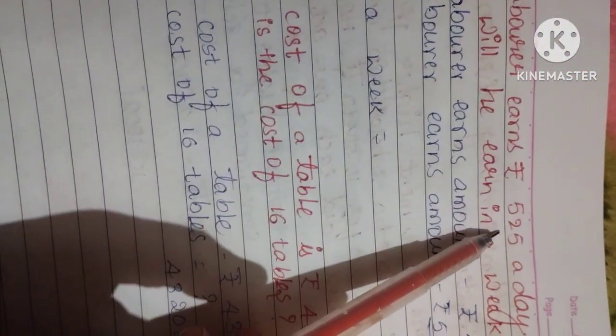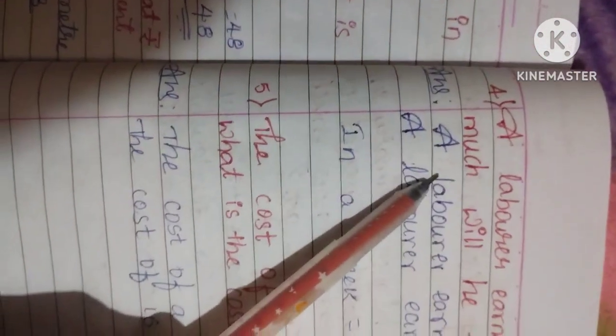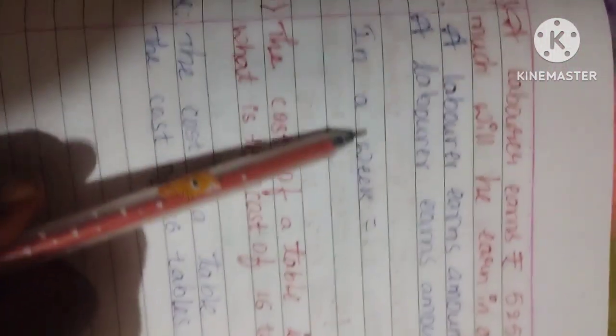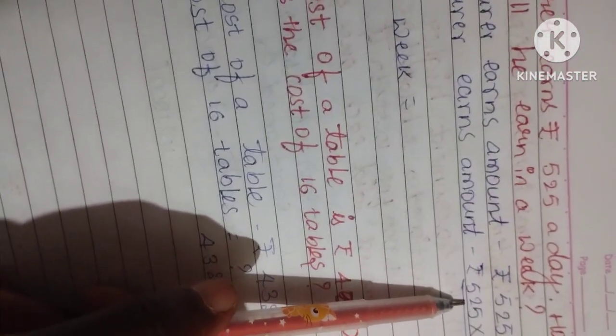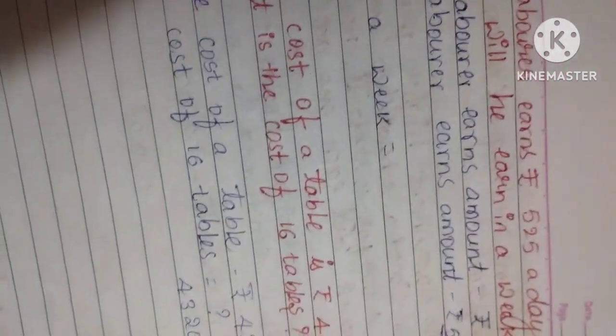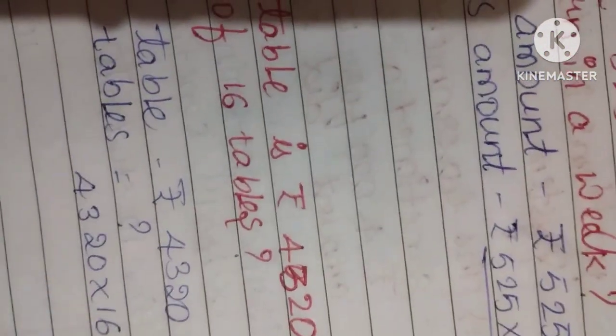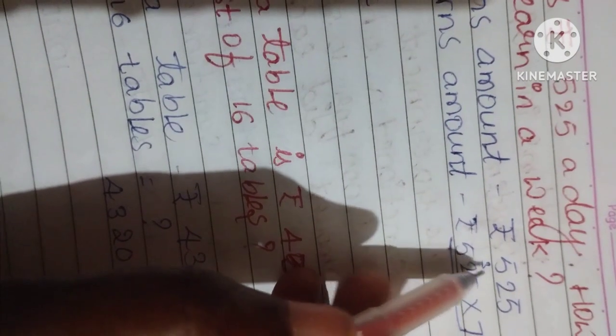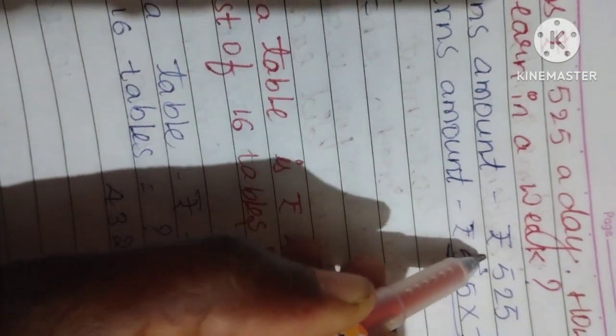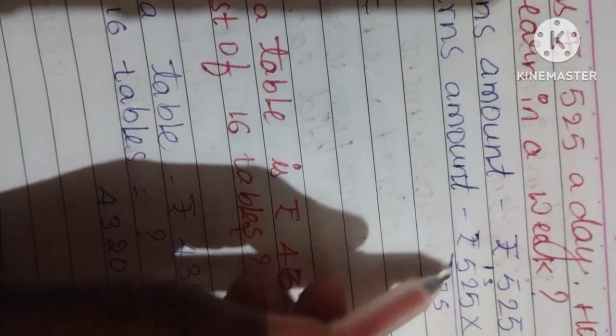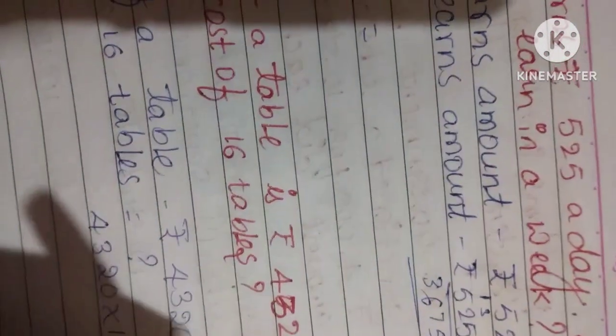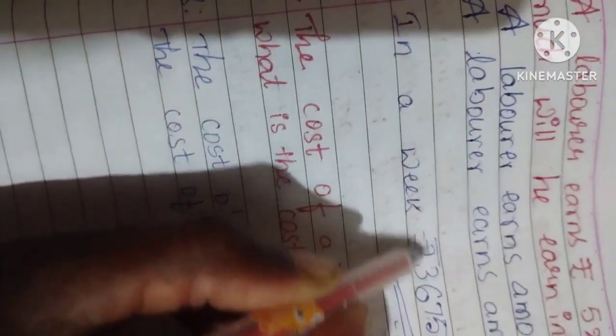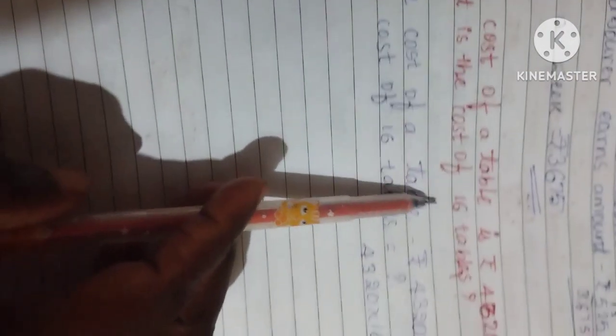A laborer earns 525 rupees a day. How much will he earn in a week? One week means seven days, so we calculate 525 into 7. Seven times 5 is 35, 3 carries. Seven times 2 is 14 plus 3 equals 17, 1 carries. Seven times 5 is 35 plus 1 equals 36. The total amount in a week is 3,675 rupees.